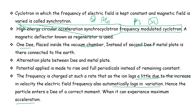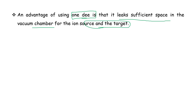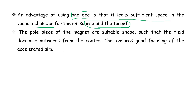The particle enters the D at the correct moment when it can experience maximum acceleration. The advantage of using one D is that it leaves sufficient space in the vacuum chamber for the ion source and the target. The magnet is shaped so that the field decreases outward from the center, ensuring good focusing of the accelerated particles.